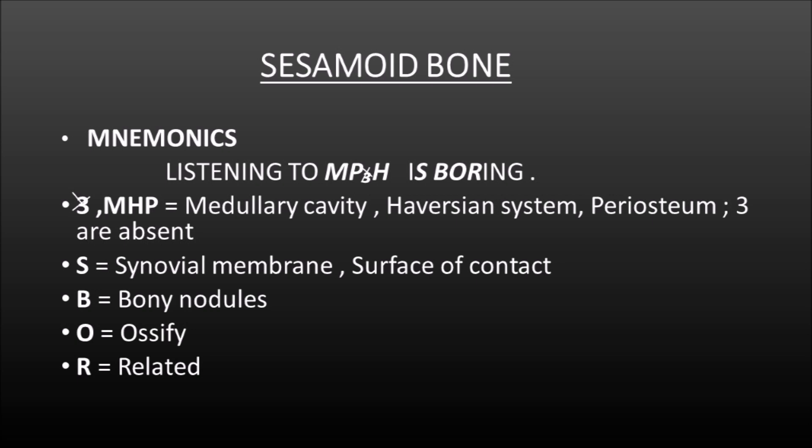I'll be telling you the most simple way to remember the important points of sesamoid bone through a mnemonic, which is 'listening to MP3 is boring.' You have to slash off the number 3 and replace it with the alphabet H. So MP3-slash-H indicates: M stands for medullary cavity, P for periosteum, H for Haversian system. The crossed or slashed 3 denotes that all these three are absent.